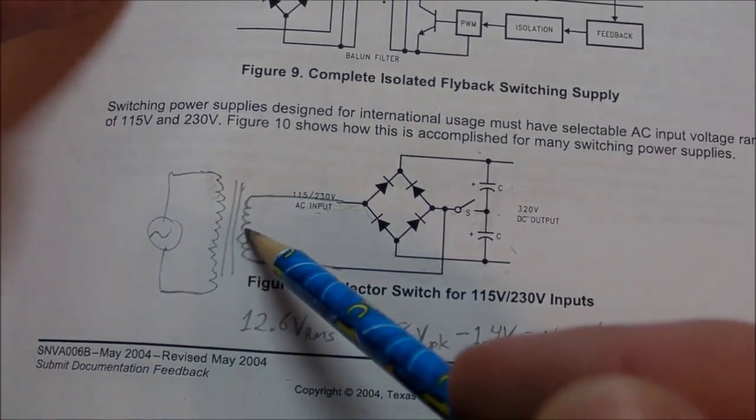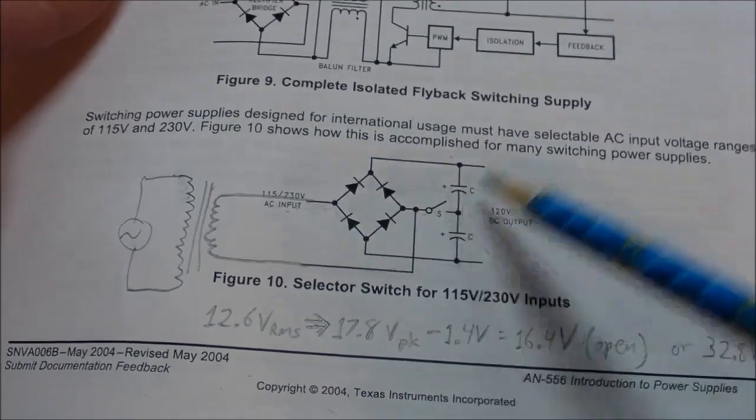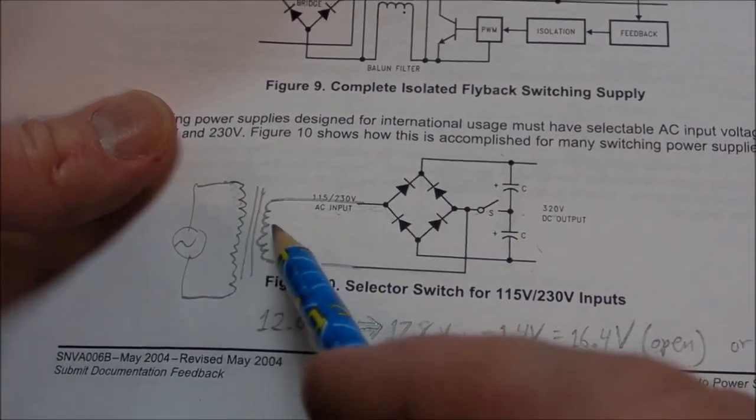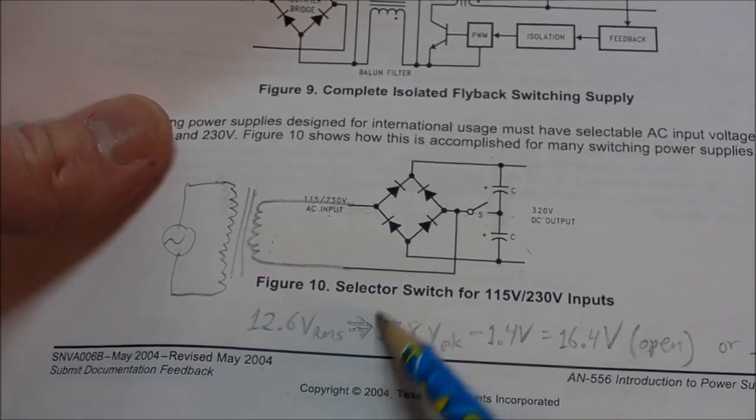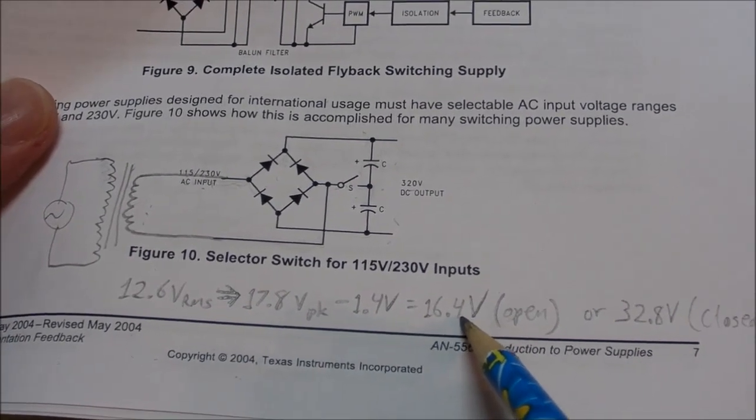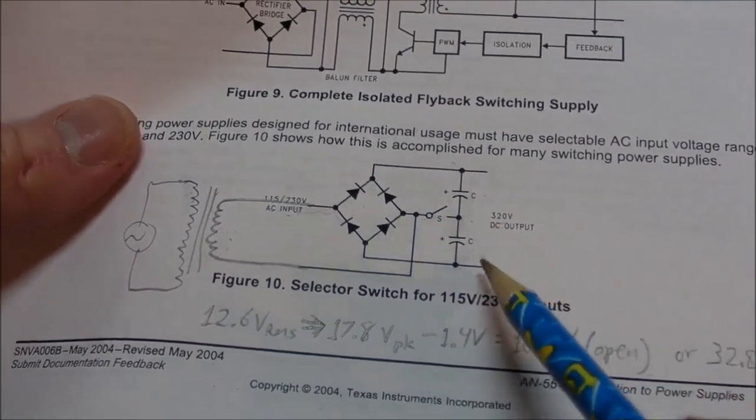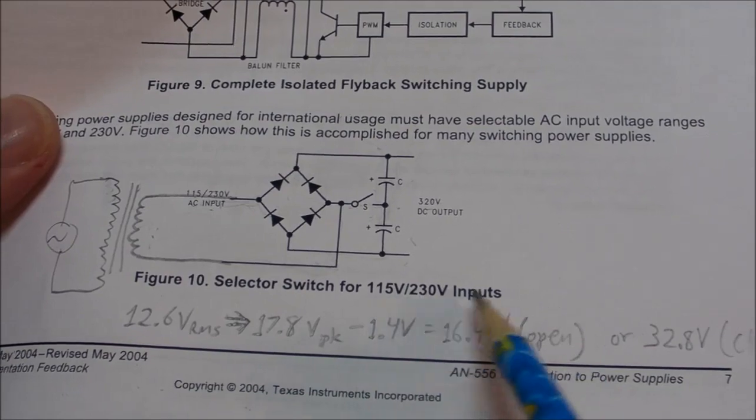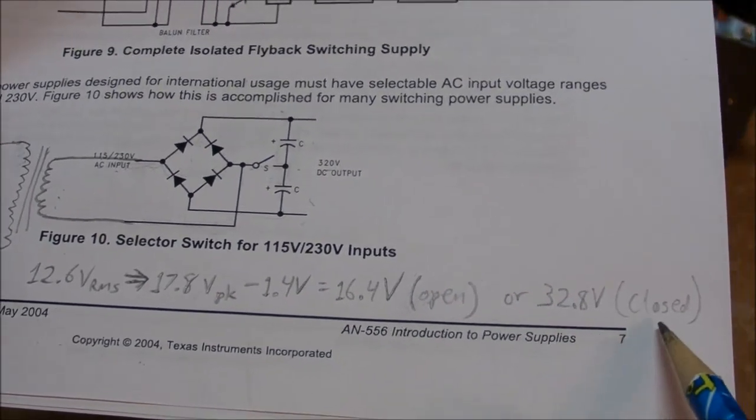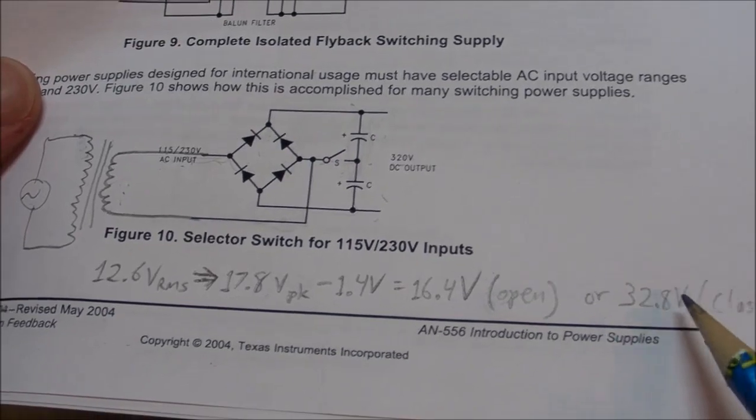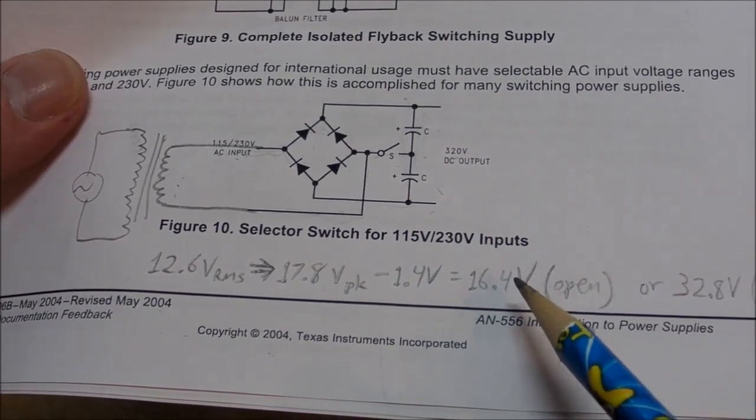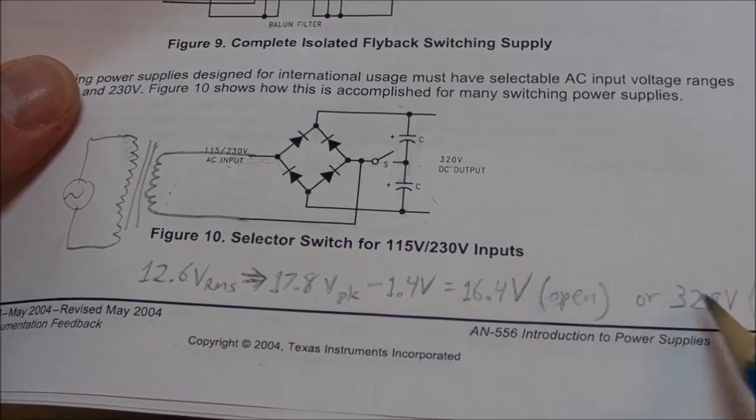Another way to look at this is if you have your line voltage going into a step down transformer and then rectifier filter, maybe a linear regulator but that's not always necessary. Suppose we have a 12.6 volt transformer here going into the rectifier. We get 17.8 volts minus the diode drop, turns out to be 16.4 volts. That's with the switch open, it just acts like a normal full wave bridge rectifier. But if you close that switch, then we end up with twice that voltage, 32.8 volts. So it's basically a voltage doubler with the switch closed, or straight up ordinary rectifier circuit with the switch open.